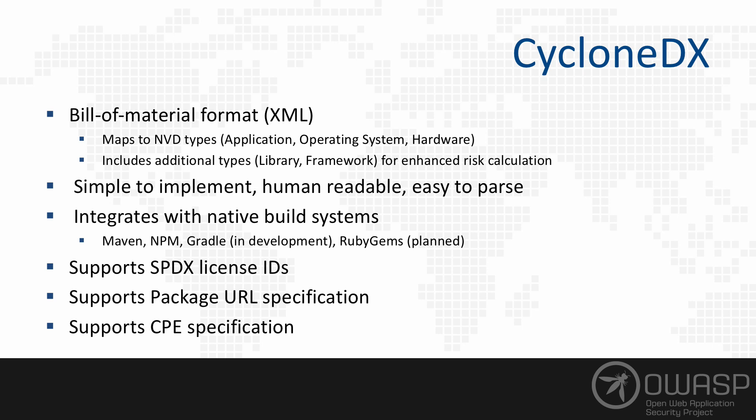The format is very simple to implement. It's human readable, extremely simple to parse, and it integrates with native build systems. To date, it supports Maven and NPM. A Gradle plugin is in development, and RubyGems is planned. But it doesn't necessarily rely on build systems — anyone can create a CycloneDX document with very little knowledge of the specification. CycloneDX also supports SPDX license IDs, the package URL specification, and the CPE specification.